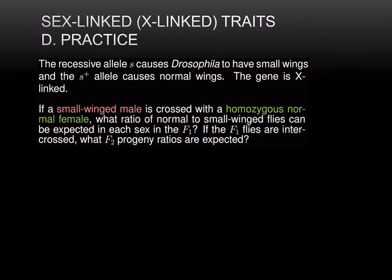Finally, I'd like you to practice working out crosses with X-linked traits by doing the reciprocal cross of what we just worked out. Previously we looked at a normal male crossed to a small-winged female. Please work out, for both the F1 and F2 generations, the genotypic and phenotypic ratios when you cross a small-winged male to a homozygous normal female. See you soon.